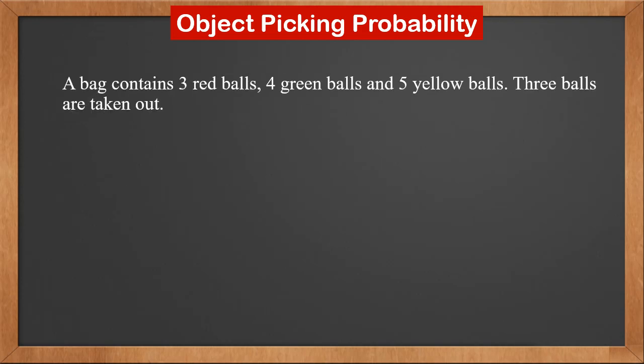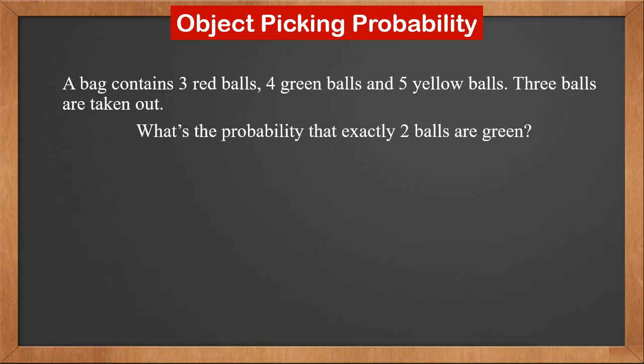A bag contains three red balls, four green balls, and five yellow balls. Three balls are taken out. What's the probability that exactly two balls are green? Two green balls gives 4C2. The remaining one ball can be any of the eight red and yellow balls, giving 8C1. Therefore, the answer is 4C2 × 8C1 over 12C3, which is twelve over fifty-five.